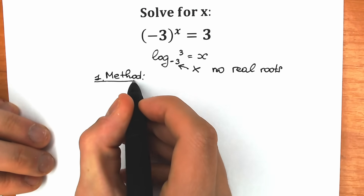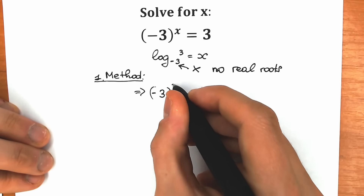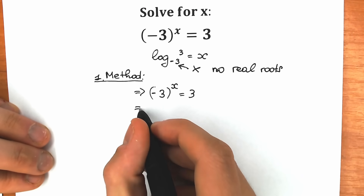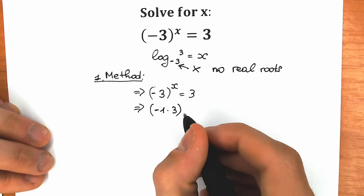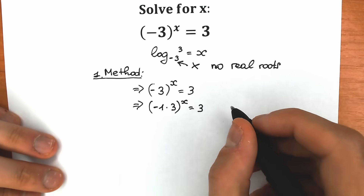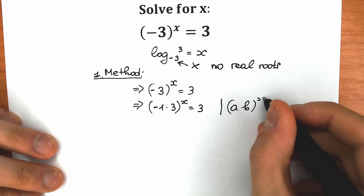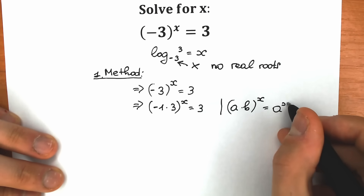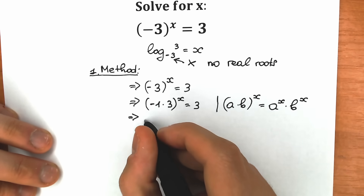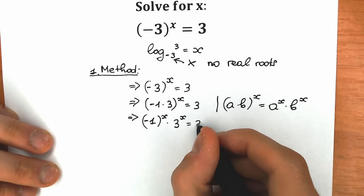For the first method, let's rewrite the equation. We have minus 3 to the power x equals 3. Instead of minus 3, let's write it as a product: minus 1 times 3, to the power x, equals 3. Using the property that (a·b)^x = a^x · b^x, we get minus 1 to the power x times 3 to the power x equals 3.